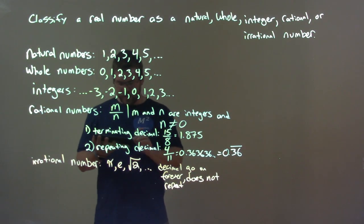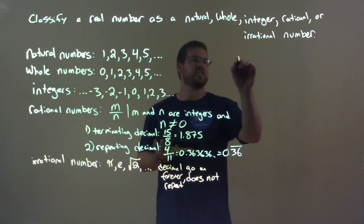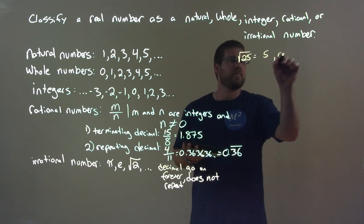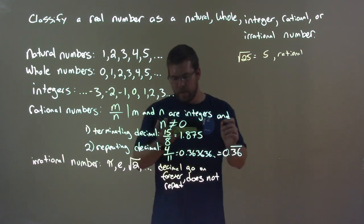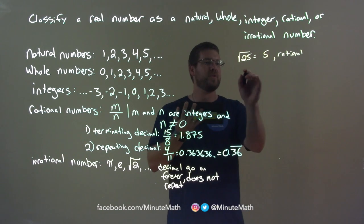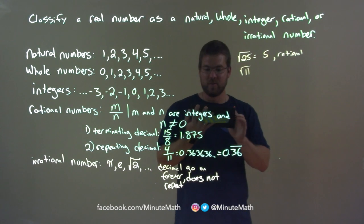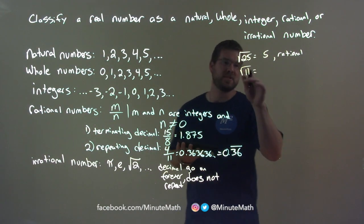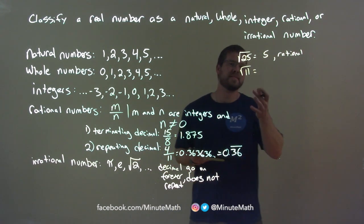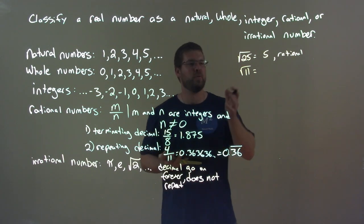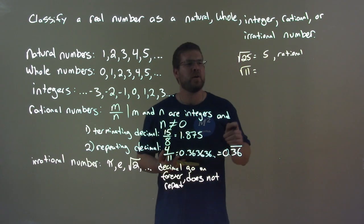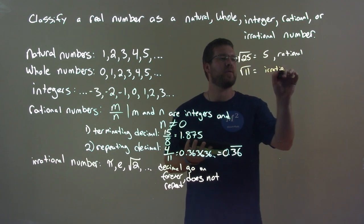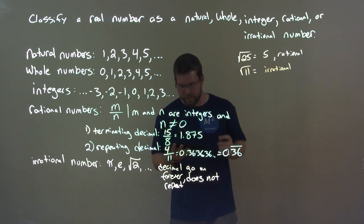There are other examples too. The square root of 25 is actually a rational number — that becomes 5, and it's rational. But if we go to the square root of 11, that's some decimal that can't be simplified further. It's somewhere between 3 and 4, because 3 squared is 9 and 4 squared is 16. Since we can't simplify that square root, we know this is irrational — it will go on forever with no repetition.